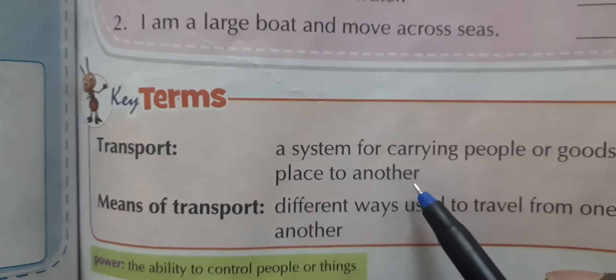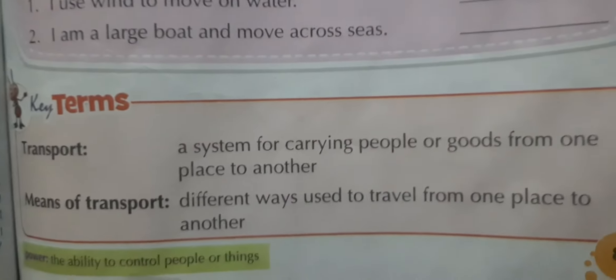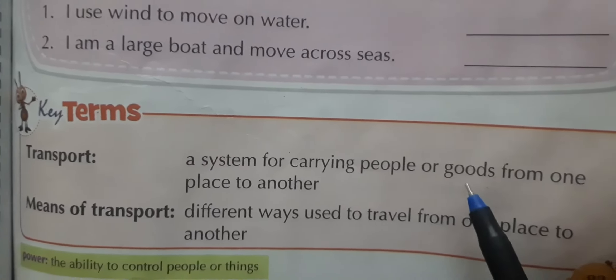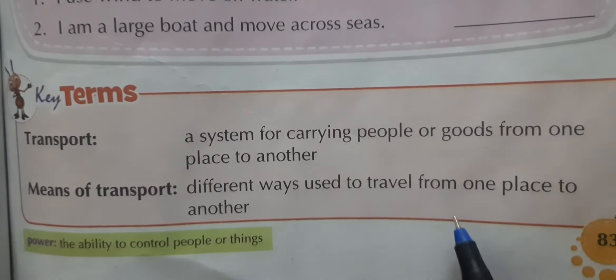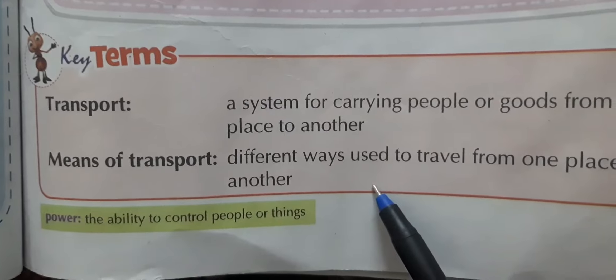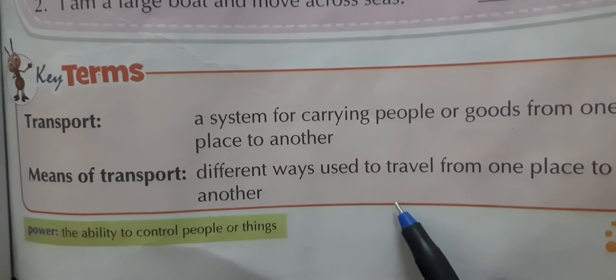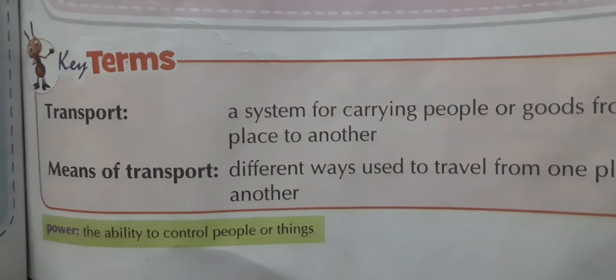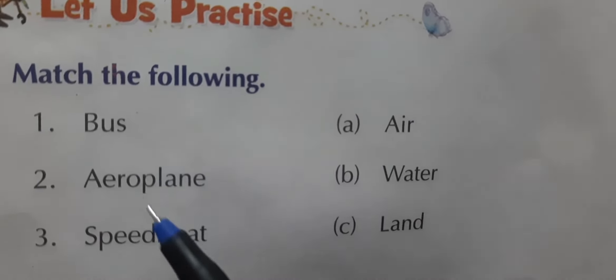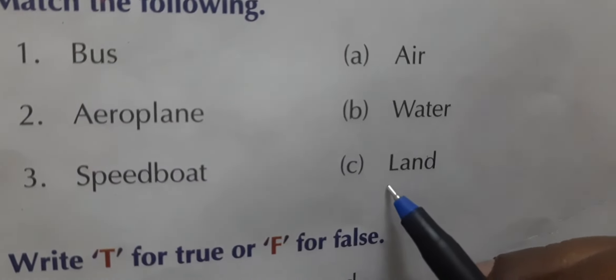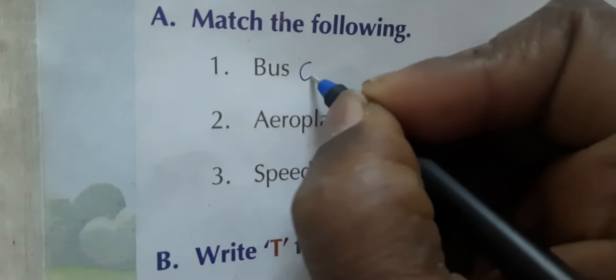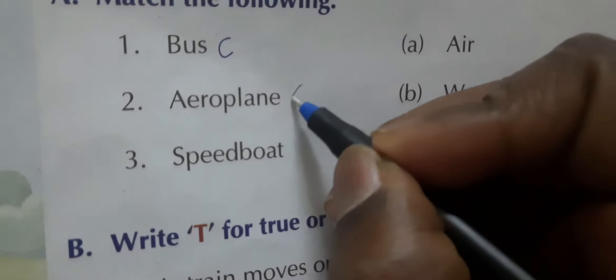Now the key terms. Transport: a system for carrying people or goods from one place to another. Means of transport: the different ways used to travel from one place to another. For example, land transport includes vehicles on land, aeroplanes are air transport, and speed boats are water transport.